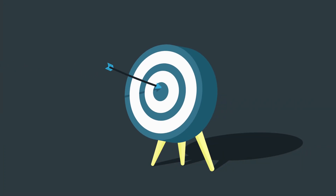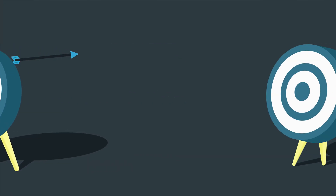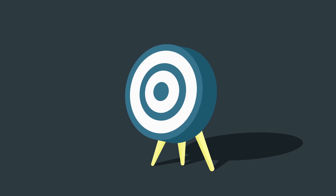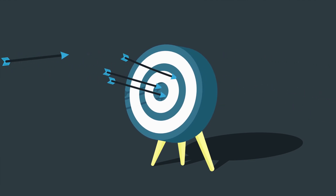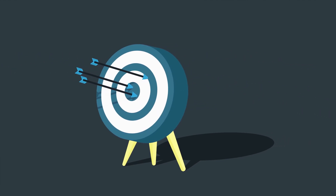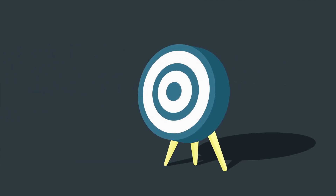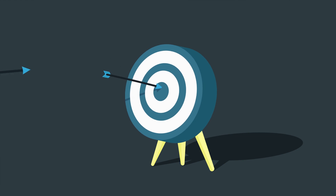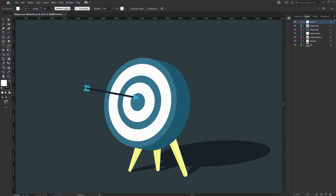Hey guys, welcome to Proud Animator. In this video we are going to learn how to animate a flying arrow in After Effects. This is the illustration we are going to use in this lesson.